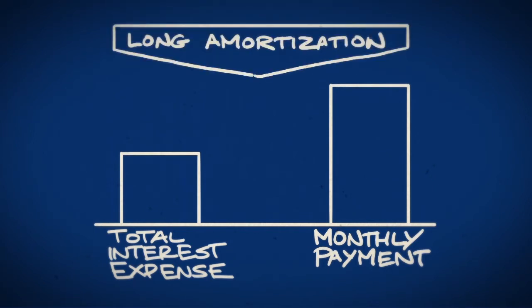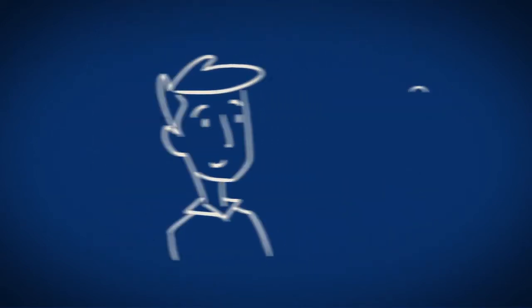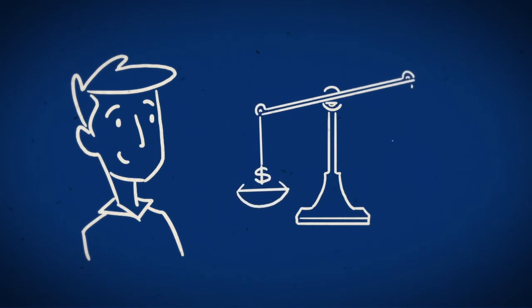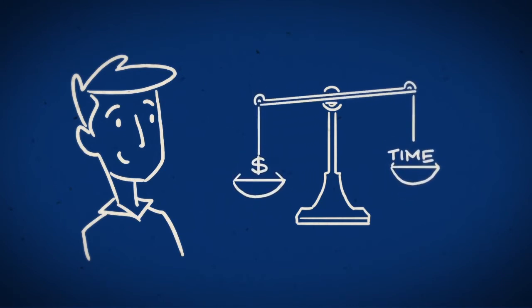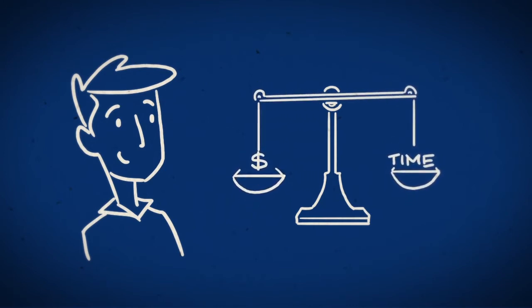On the other hand, with a longer amortization, your payments will be lower, but it will take longer to pay off your mortgage and your total interest expense will be greater. It really comes down to balancing what you're comfortable with from a payment perspective with what your goal is for the amount of time it will take to pay your mortgage off.